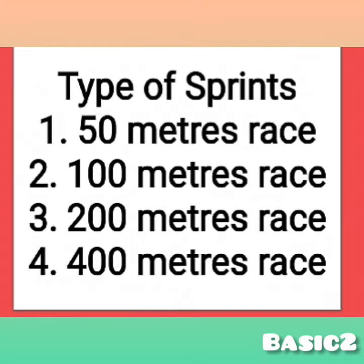Tracks are white lines of equal sizes drawn on a field for short or long distance races. You can see the types of sprint, which are 50, 100, 200, and 400 meters.